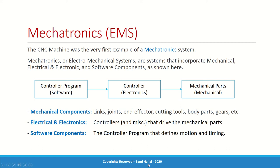The three components of a mechatronic system are: the mechanical components — such as links, joints, cutting tools, body parts, and equipment; the electrical and electronic components — such as the controller that controls the motion of those mechanical parts; and finally the software — the program telling the controller what to do. These three elements — software, controller (electronics), and mechanical parts — are all put together, resulting in what we call mechatronics or electromechanical systems.